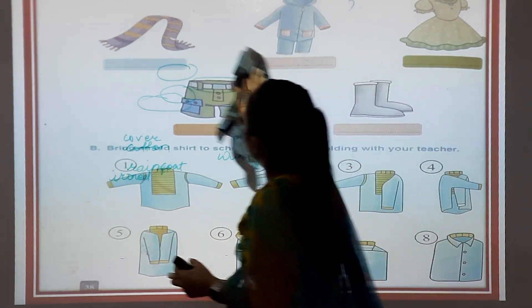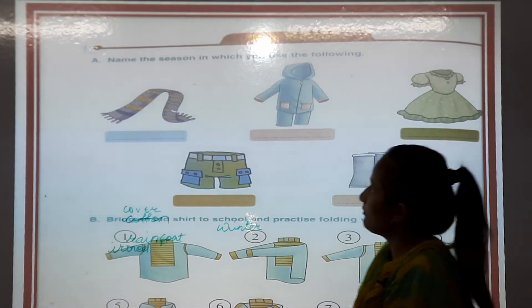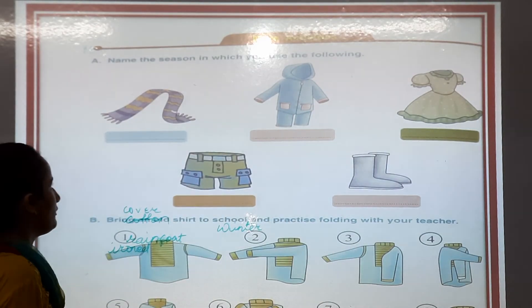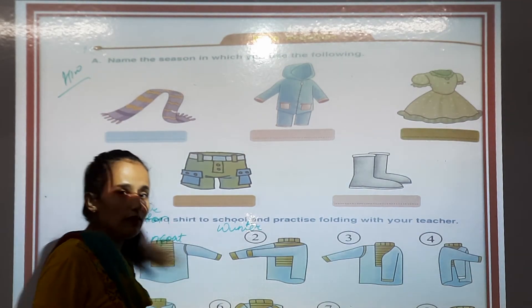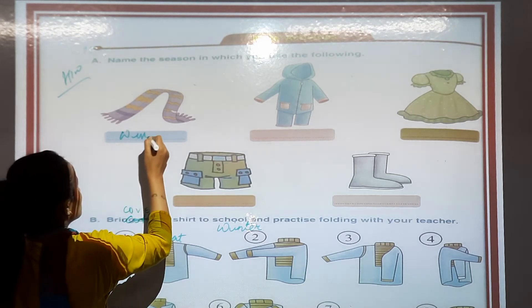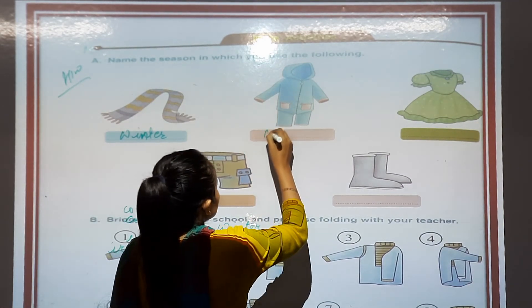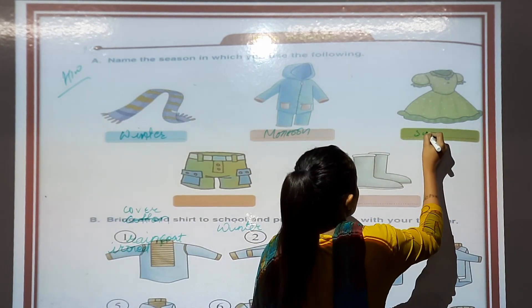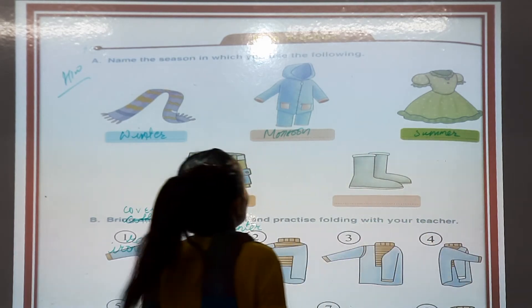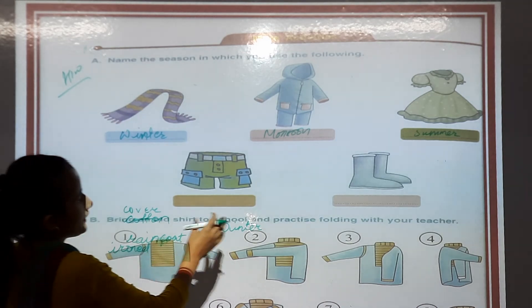Name the seasons in which you use the following. Muffler — aap kab use karte hain? Winter season. Raincoat — monsoon season. Cotton clothes — summer season. Aapko yahan season ka naam likhna hai.